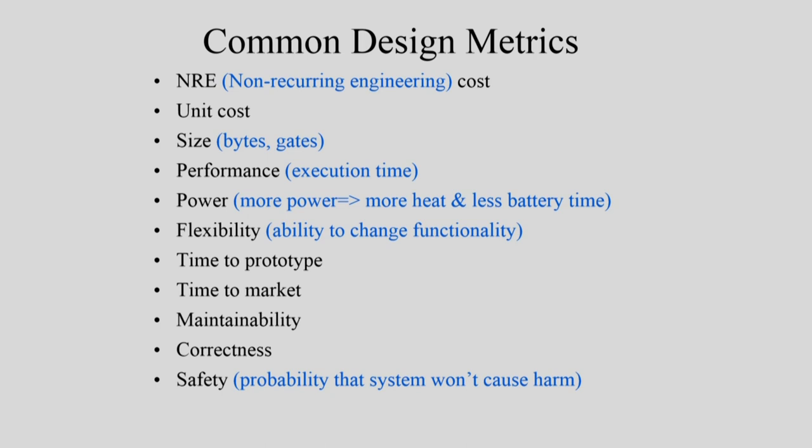We sensitize the participant to common design metrics for understanding embedded systems. Non-recurring engineering cost is the cost at the beginning to design or conceptualize the artifact. Then there is the per-piece cost — the material and production cost — leading to a unit cost where chips have a very high NRE cost, almost millions of dollars, while the unit cost is very low.